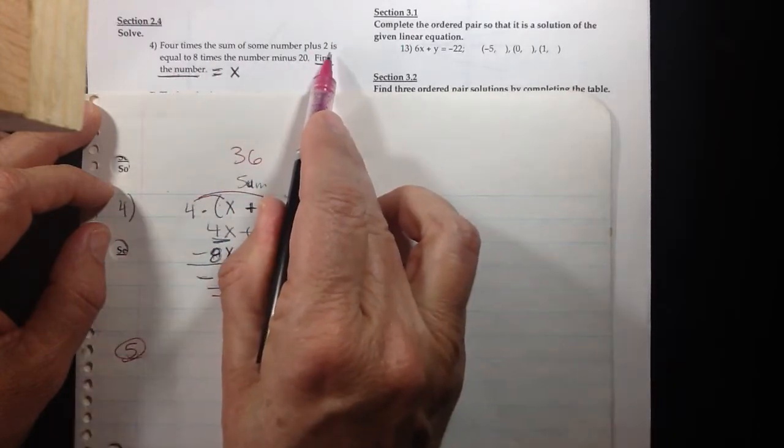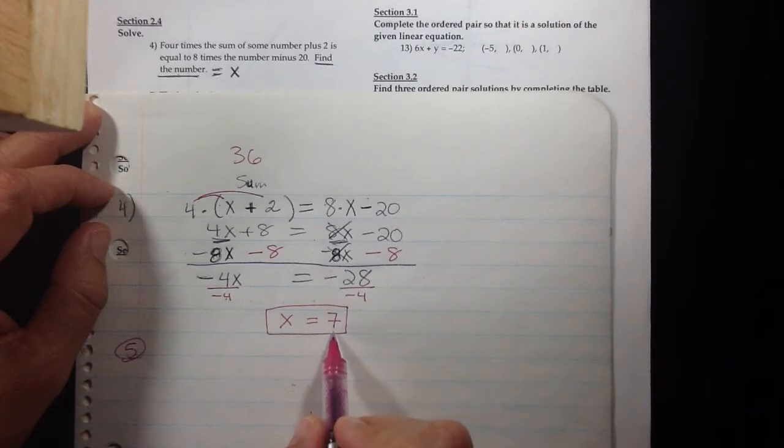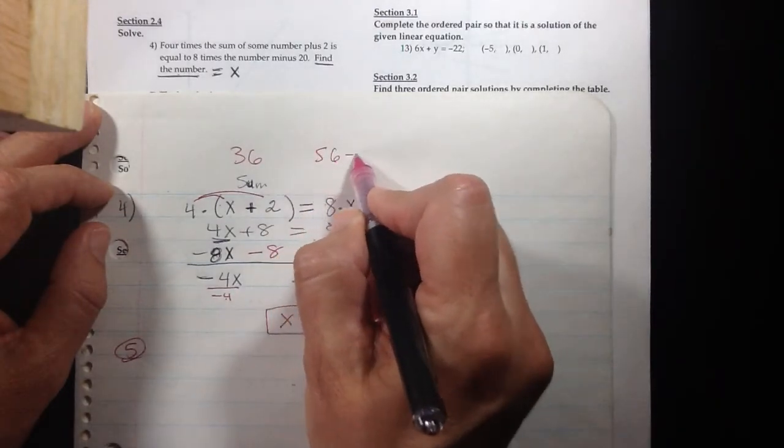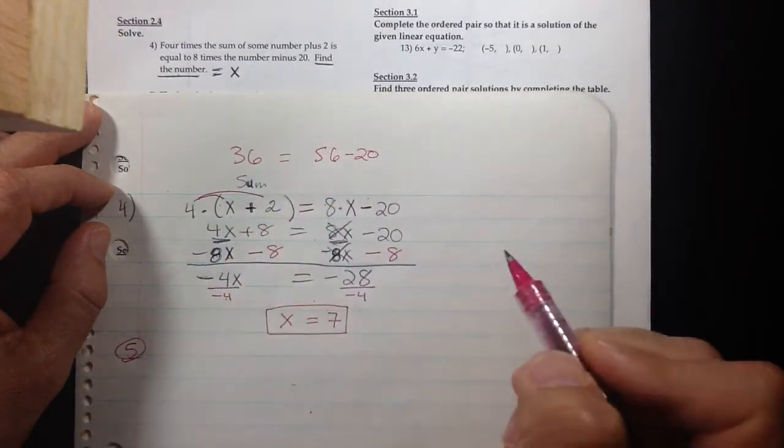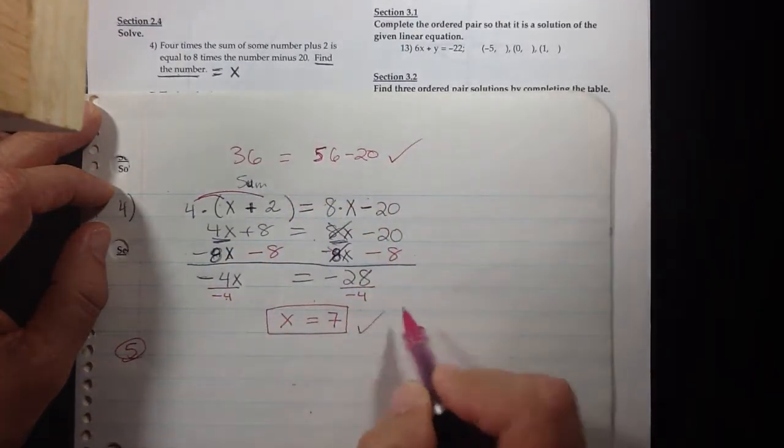And we can check to see is that equal to eight times the number minus twenty. Well eight times this mystery number, eight times seven, fifty-six, fifty-six minus twenty indeed is the same so we're good, so we know our answer must be right.